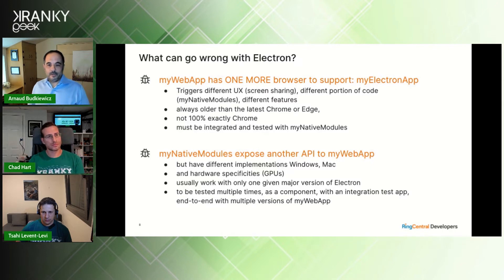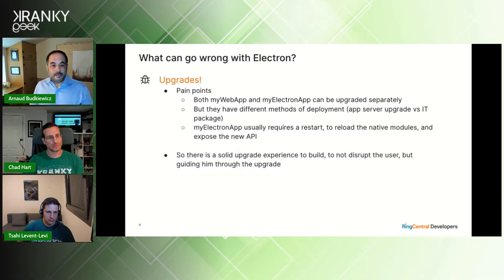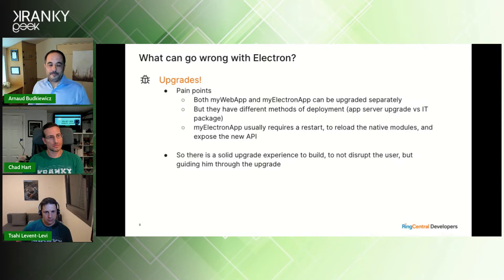Your native modules usually work with only one given major version of Electron, so they must be tested multiple times as a component with an integration test app and with multiple versions of your web app. Another pain point is upgrades — both your web app and your Electron container can be upgraded separately but have different deployment methods. An app server upgrade for one, distribution of an IT package for the other. An upgrade of your Electron app will probably require a restart to reload the native module and expose the new API, so there is a solid upgrade experience to build to not disrupt the user.